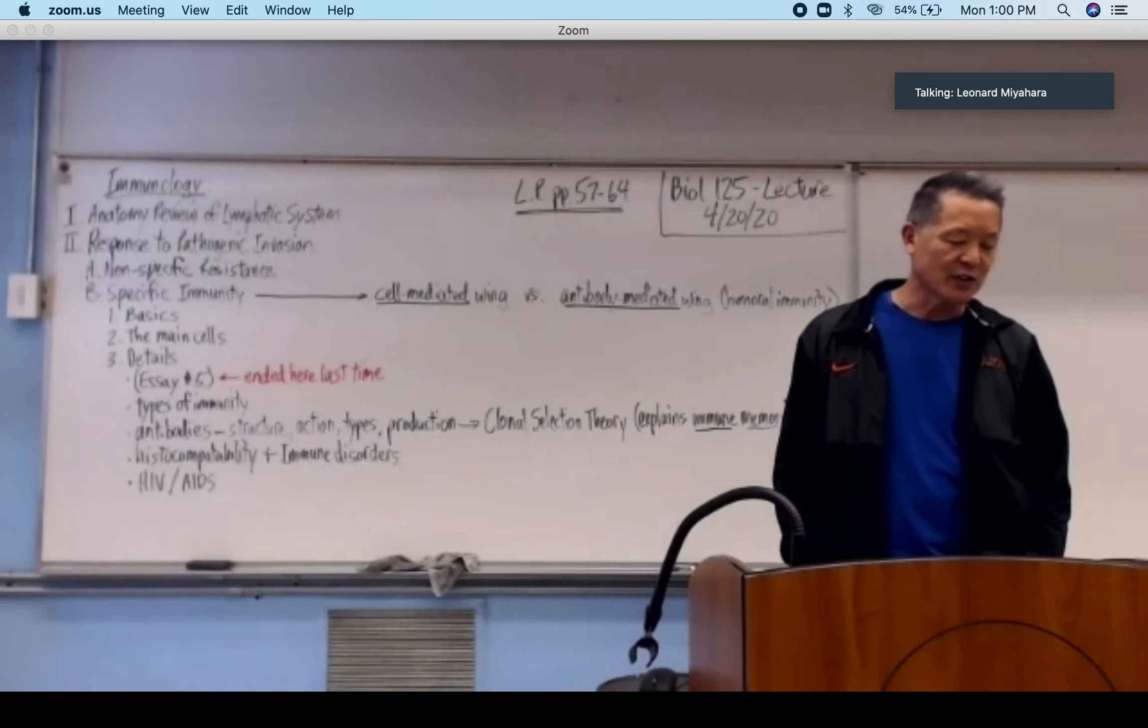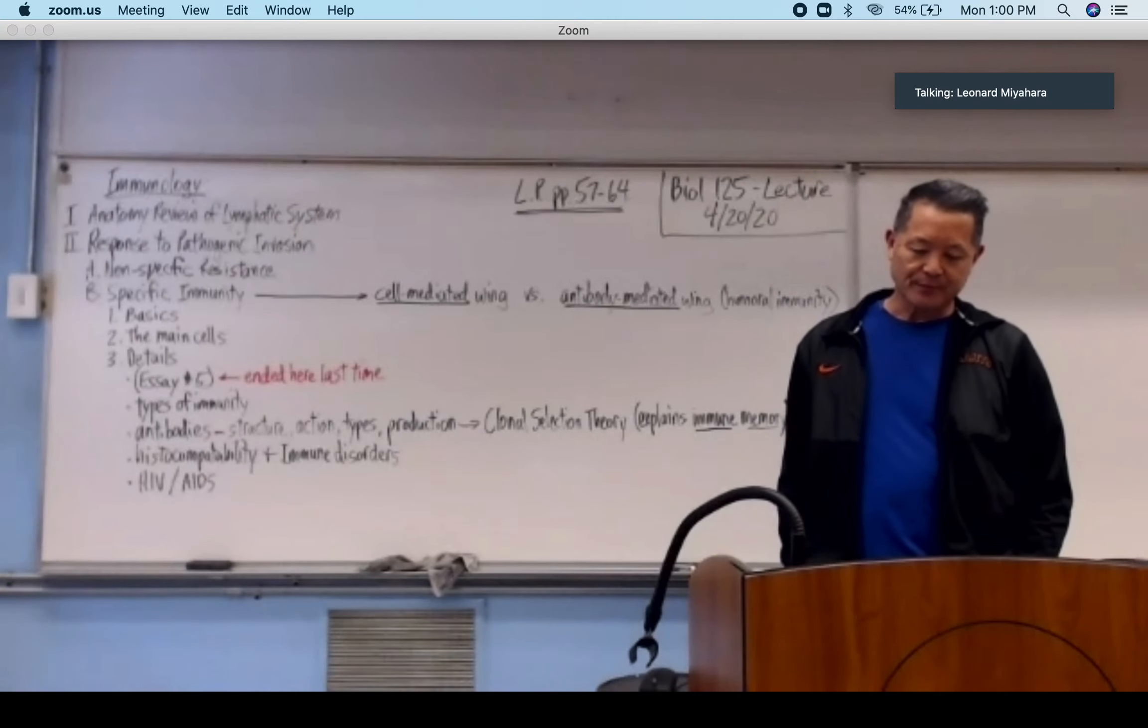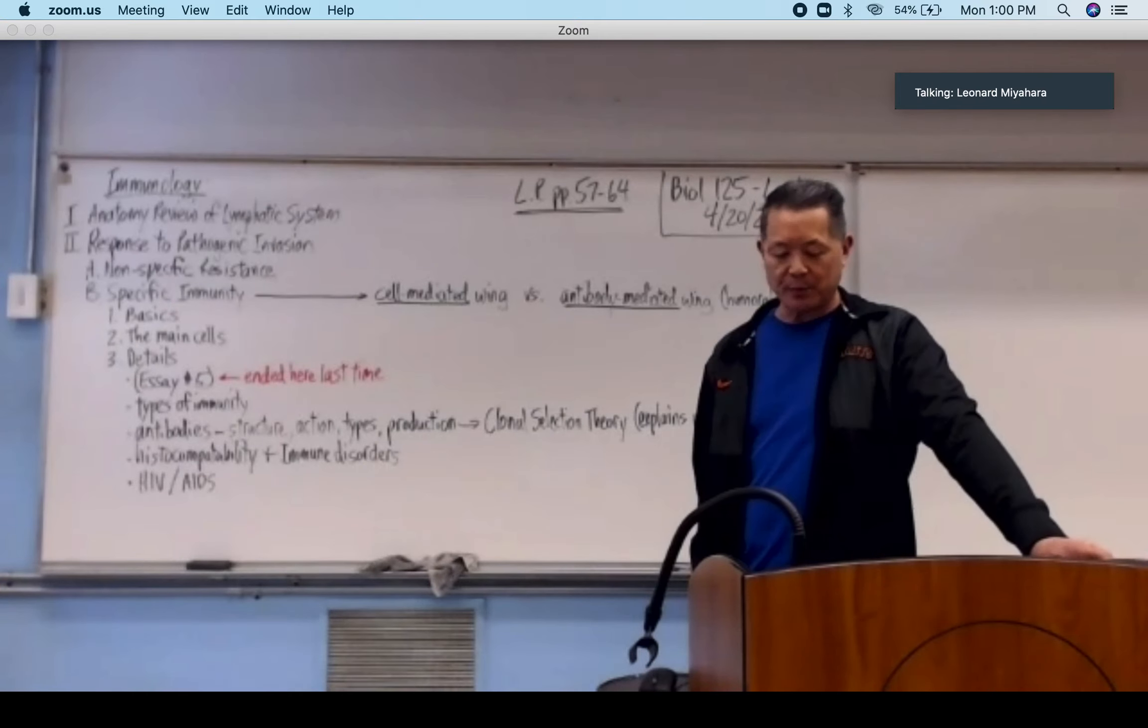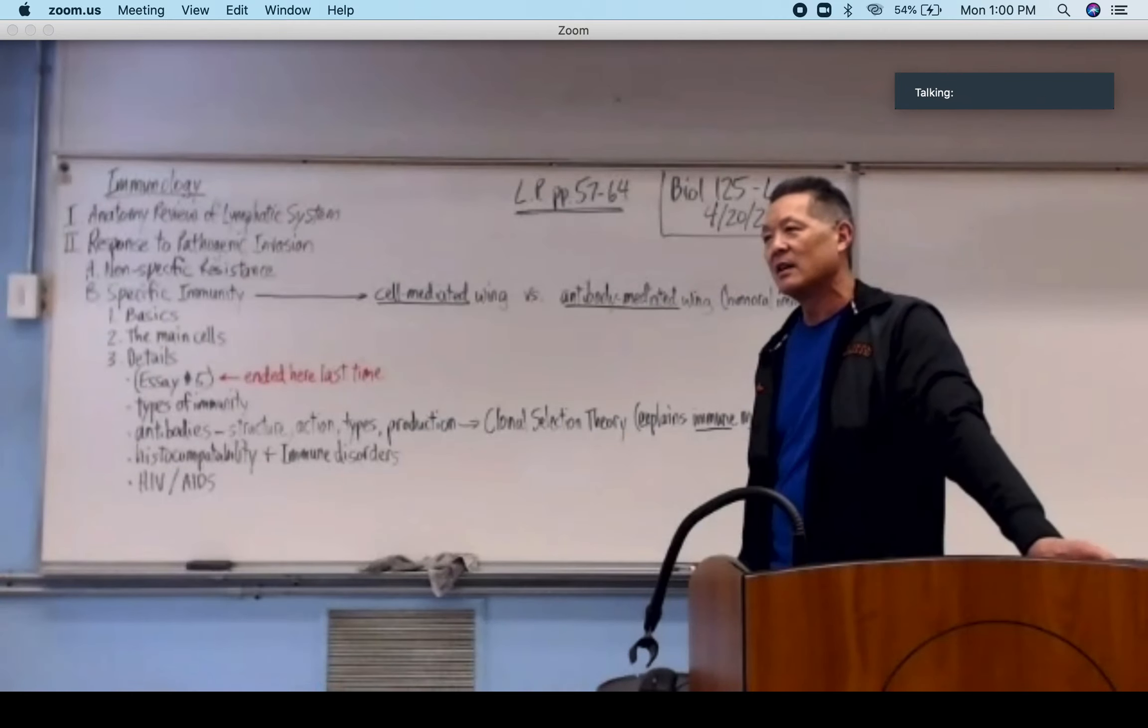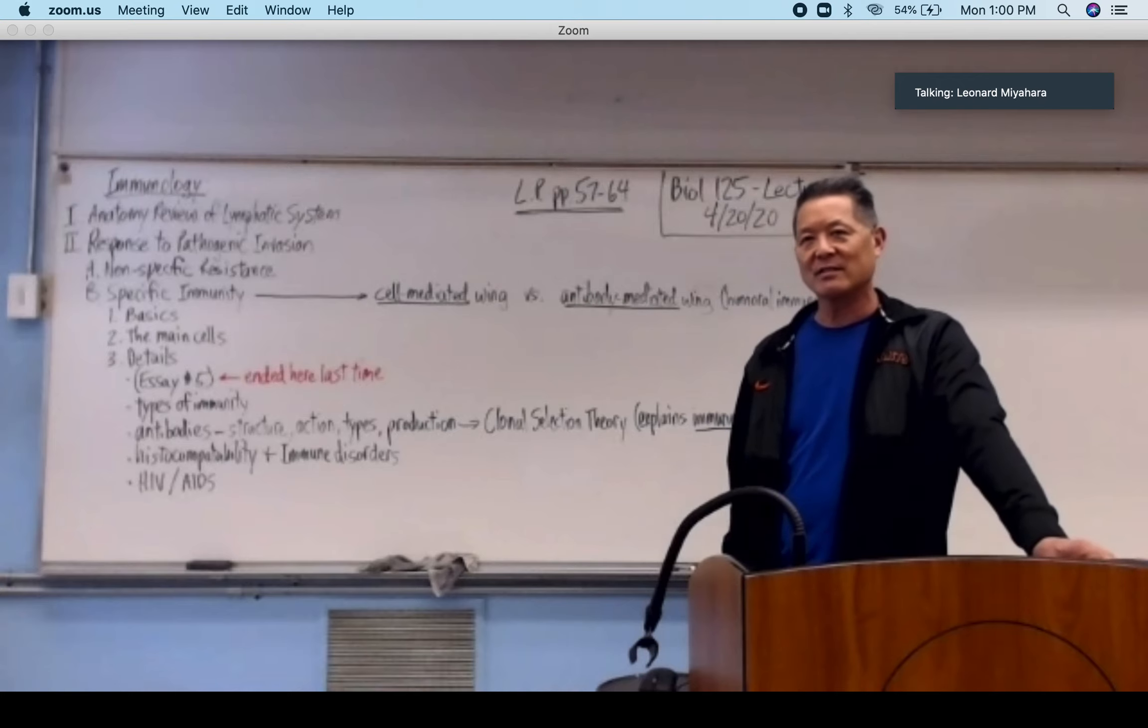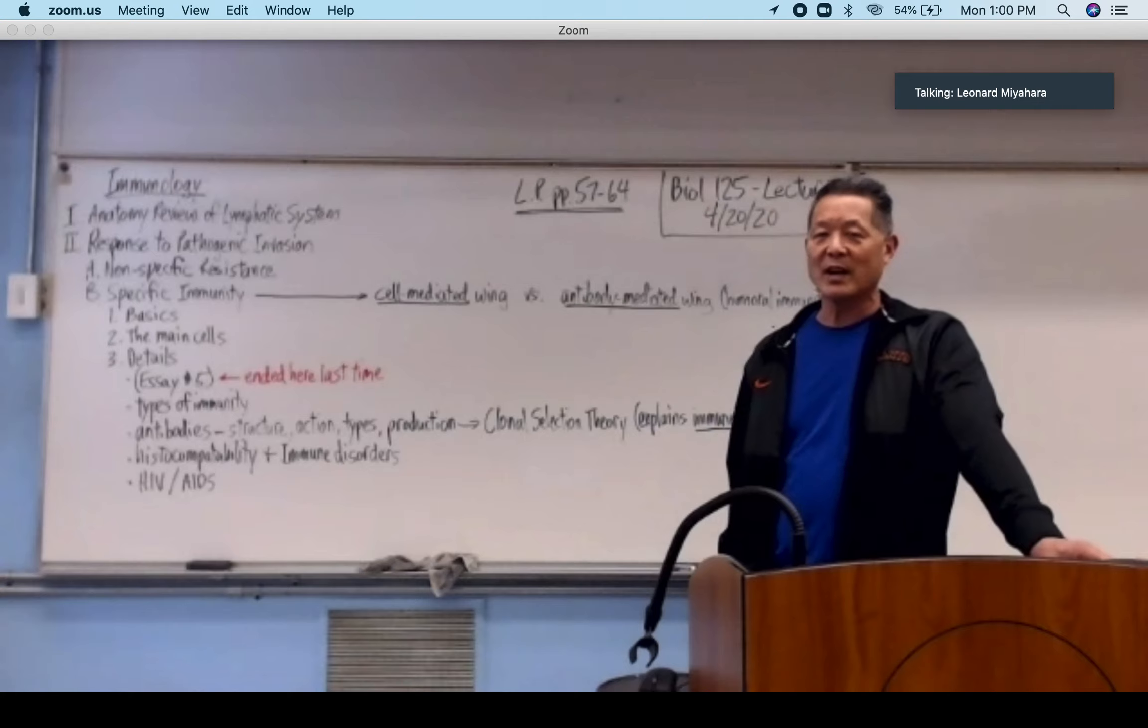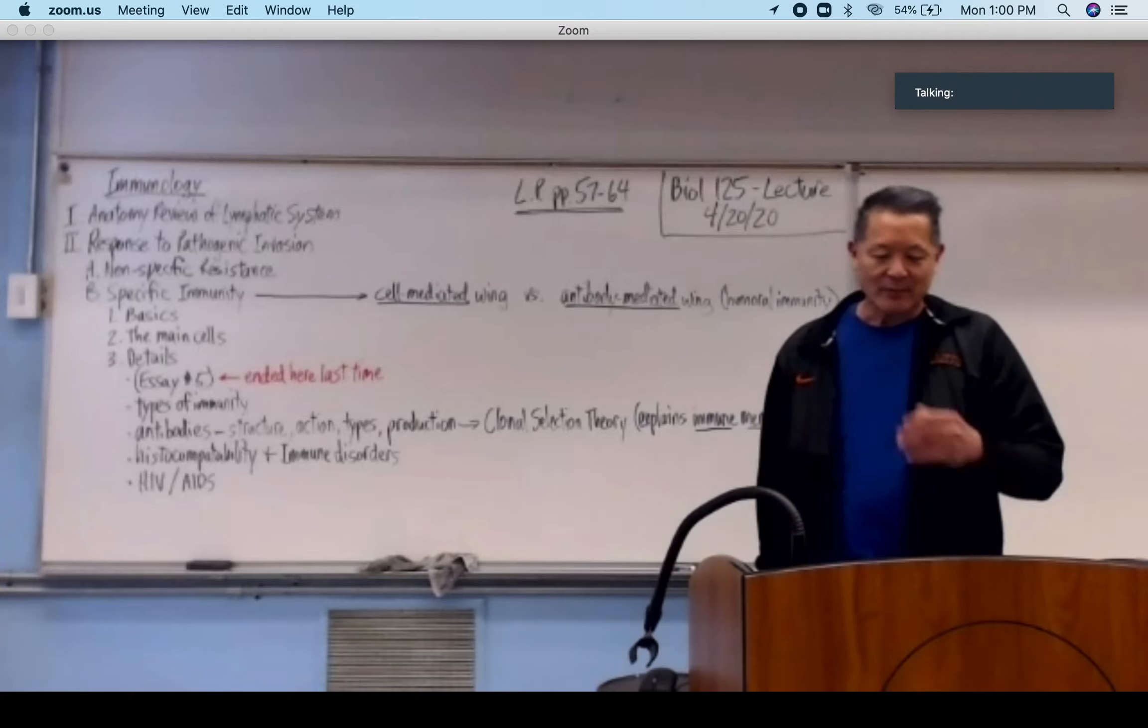At the tops of the Ys are the antigen binding sites. The bottom of the Y is the complement binding site. The vast majority of these chains are constant for our species. If you look at that figure on the bottom right, it's the lighter purple. The dark purple is constant. It's in our genes. The amino acids are always the same.